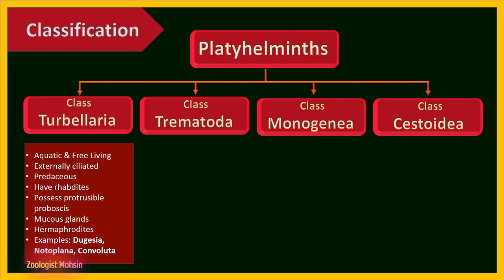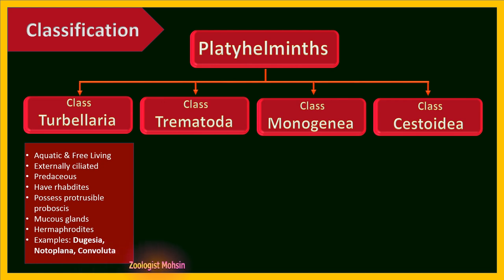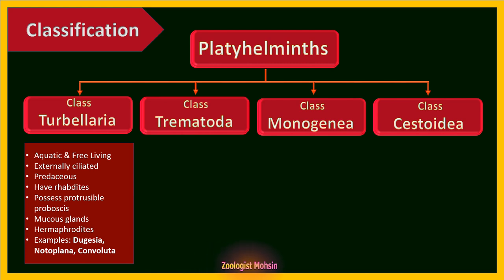Rhabdites secrete certain sticky substances used to protect them from predators when in danger. Turbellarians also possess a protrusible proboscis, like an external pharynx, and mucous glands which secrete mucus. They are hermaphrodites, meaning both sexes are present in the same organism. Examples include Dugesia, Notoplana, and Convoluta.